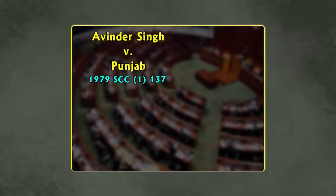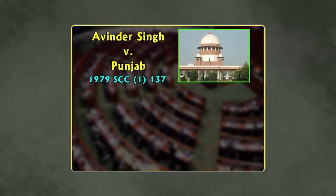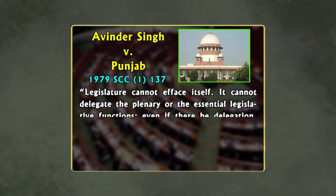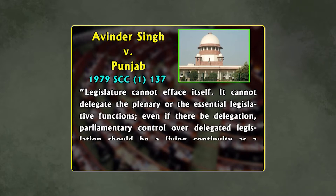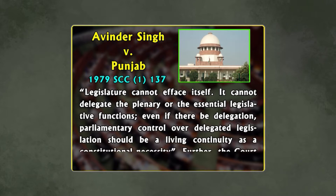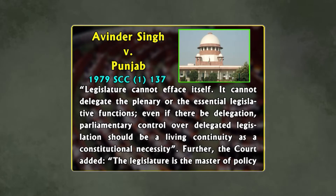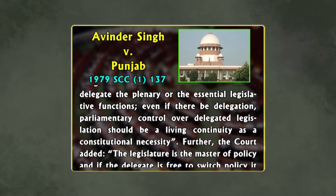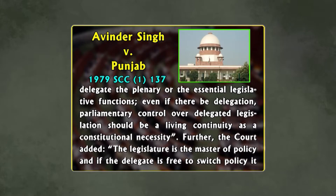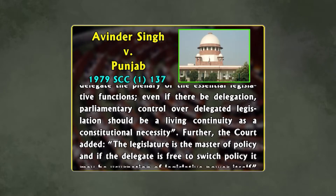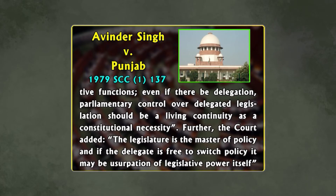When there is non-performance of the essential legislative function, the challenge in review proceedings revolves around the abdication by the legislature of its essential legislative function. Thus, in Avinder Singh v. Punjab, the Supreme Court ruled that the legislature cannot efface itself. It cannot delegate the plenary or essential legislative functions. Even if there be delegation, parliamentary control over delegated legislation should be a living continuity as a constitutional necessity. The court added that the legislature is the master of policy, and if the delegate is free to switch policy, it may amount to a usurpation of legislative power itself.